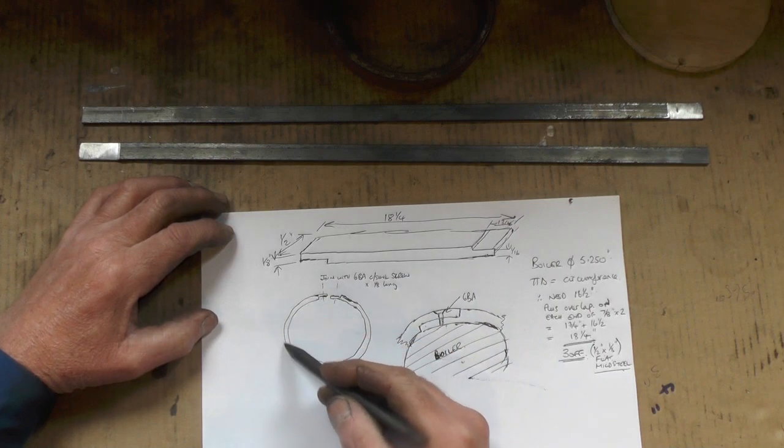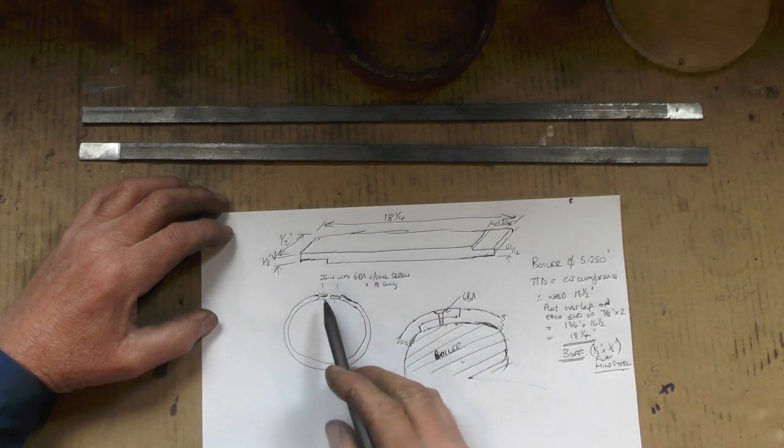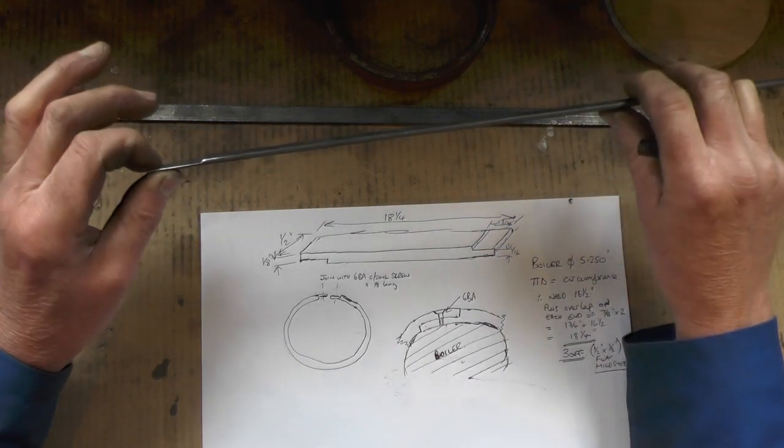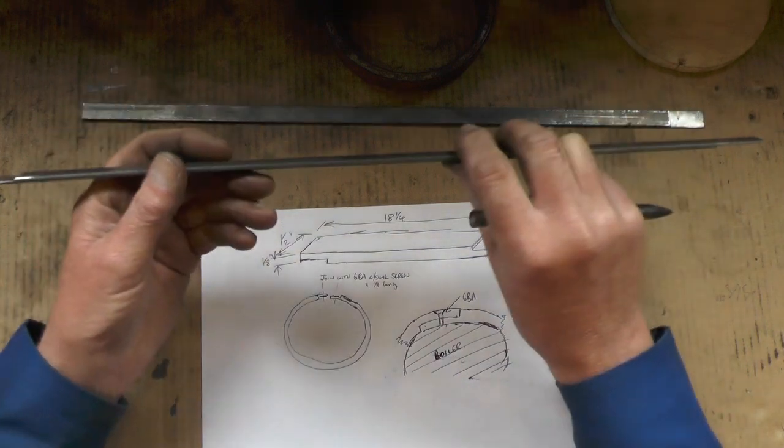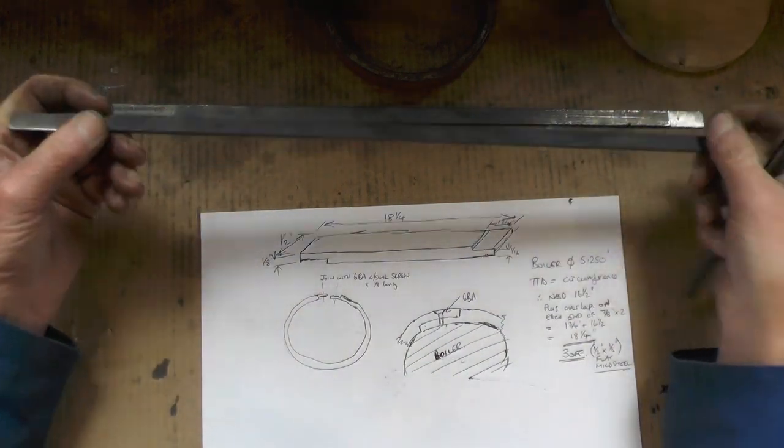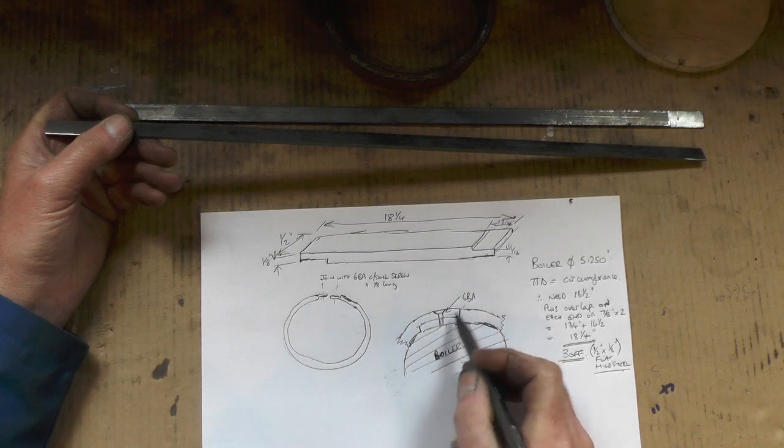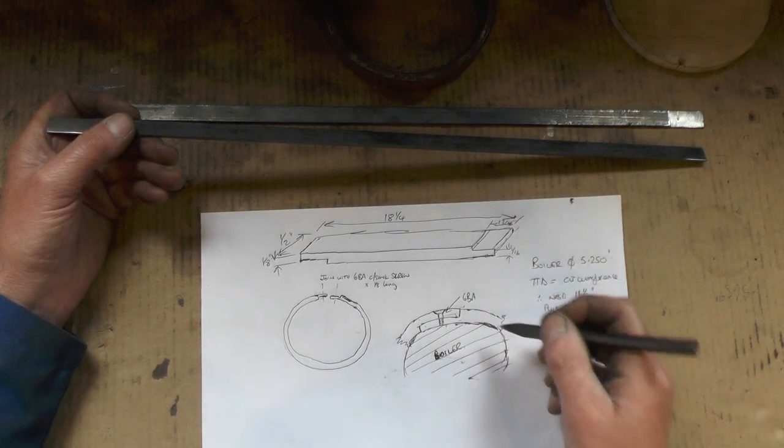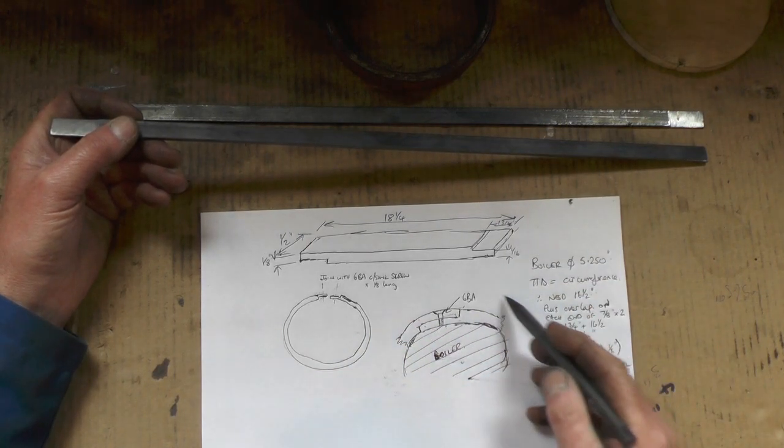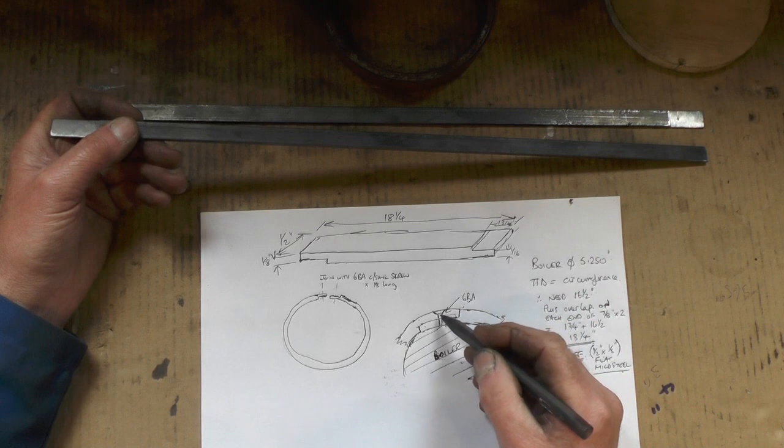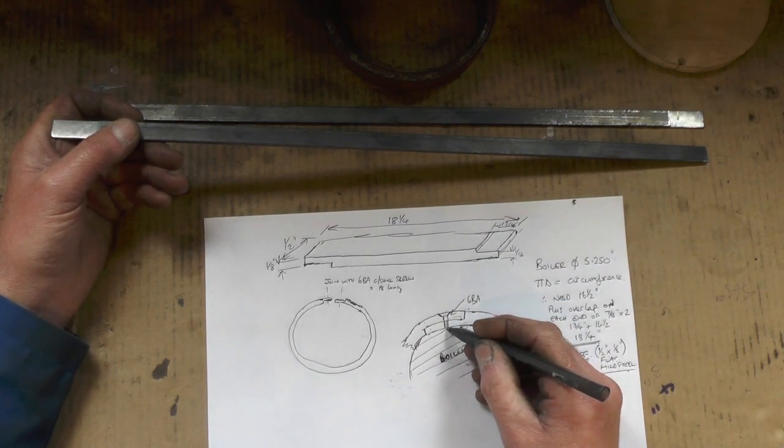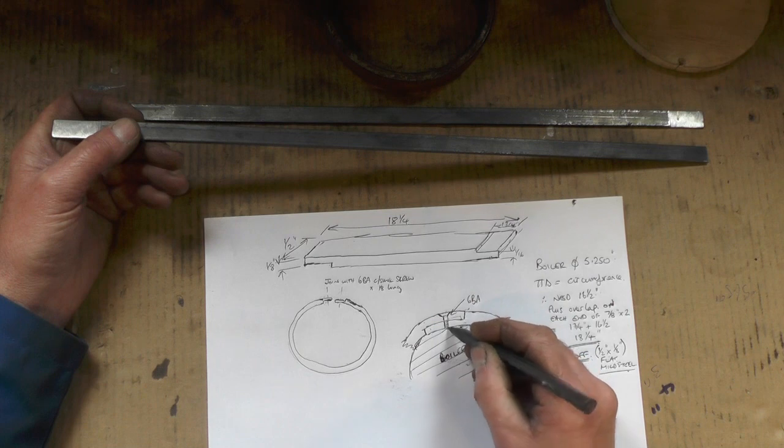I'm going to bend it into a circle and on each end of the steel I've thinned it down to half the thickness on opposite ends, because when I bend it I want them to meet and join and be flush. Once I've bent it, it'll come around the boiler and then I'm going to put a jubilee clip on to clamp it around the boiler. Then I'm going to mark for the hole for a 6BA screw and that's how I'm going to fix it. Obviously it's only going to be an eighth inch long screw because I don't want to go into the boiler.